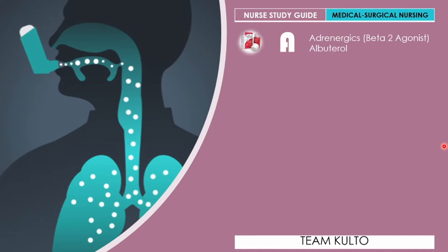'S' stands for Steroids. The steroids used to treat asthma are known as corticosteroids — copies of hormones your body produces naturally. Steroids help asthma by calming inflamed airways and stopping inflammation, helping ease asthma symptoms such as breathlessness and coughing.